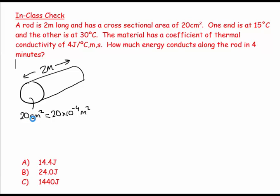If there's 10 to the 2 centimeters in a meter, there's 10 to the 2 times 10 to the 2 square centimeters in a square meter. So 1 square centimeter is 10 to the minus 4 square meters - watch out for that. We have a temperature of 15 degrees C here and 30 degrees C there.